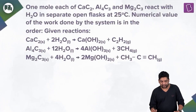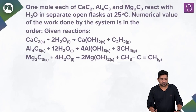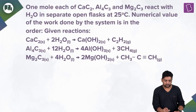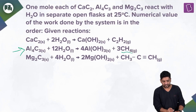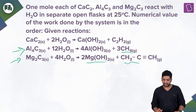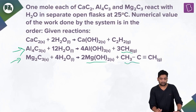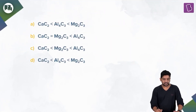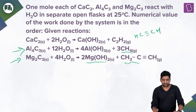Next question: one mole each of CaC₂, Al₄C₃, and Mg₂C₃ react with water in separate open flasks at 25°C. Compare the numerical values of work done. The reactions are: CaC₂ → C₂H₂ (acetylene) + Ca(OH)₂; Al₄C₃ → Al(OH)₃ + 3CH₄ (methane); Mg₂C₃ → 2Mg(OH)₂ + CH₃C≡CH (propyne).